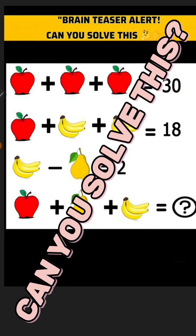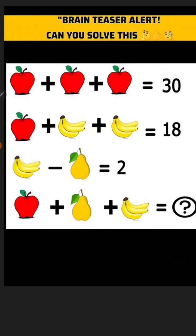If we look at this together, we have 3 apples equals 30, meaning each apple is 10. This is 10, and this is 10 — 10 plus 10 plus 10 equals 30. So apple is 10.